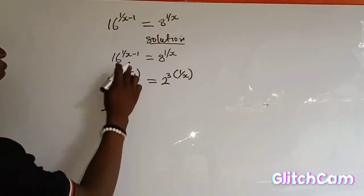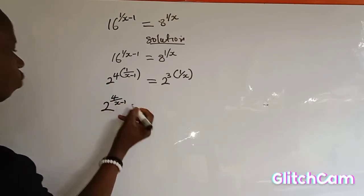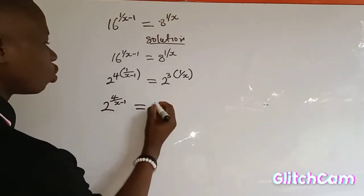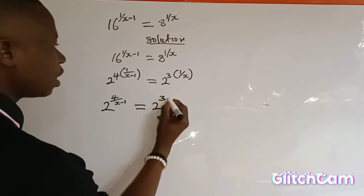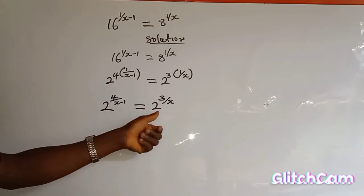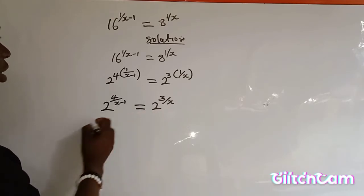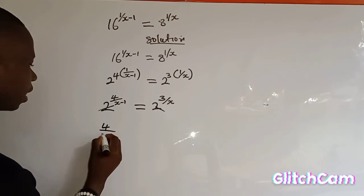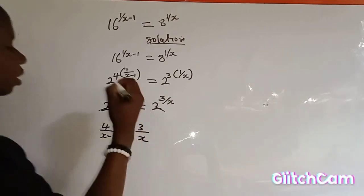I'll have 2 to the power of 4 multiplied by the bracket, giving 4 over s minus 1 — since 4 multiplied by 1 is 4 — which is equal to 2 to the power of 3 multiplied by 1 over s, giving 3 over s. In this equation you notice that the bases are now equal, so we can eliminate the base and equate the powers: 4 over s minus 1 equals 3 over s.